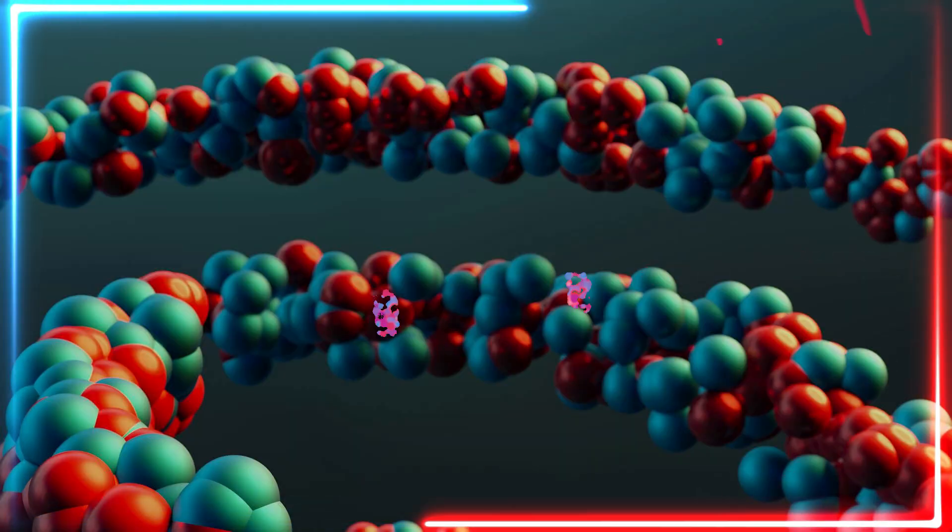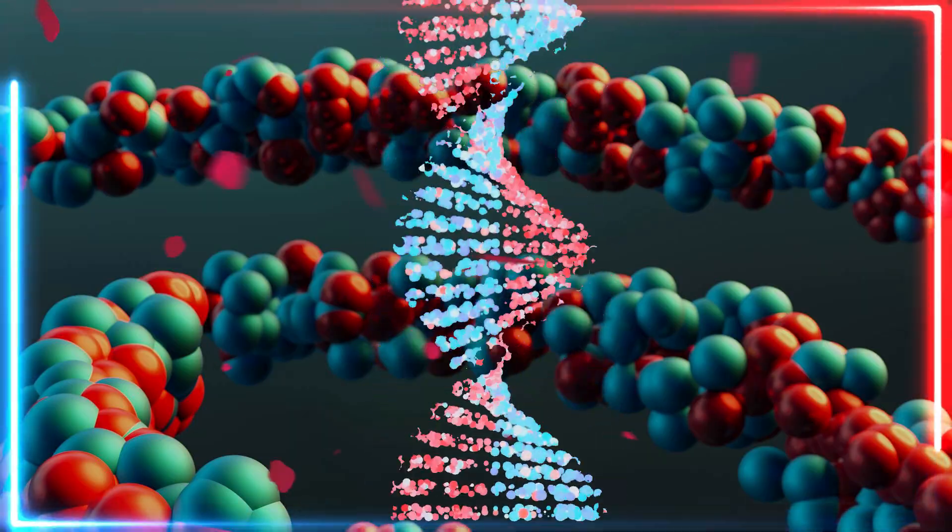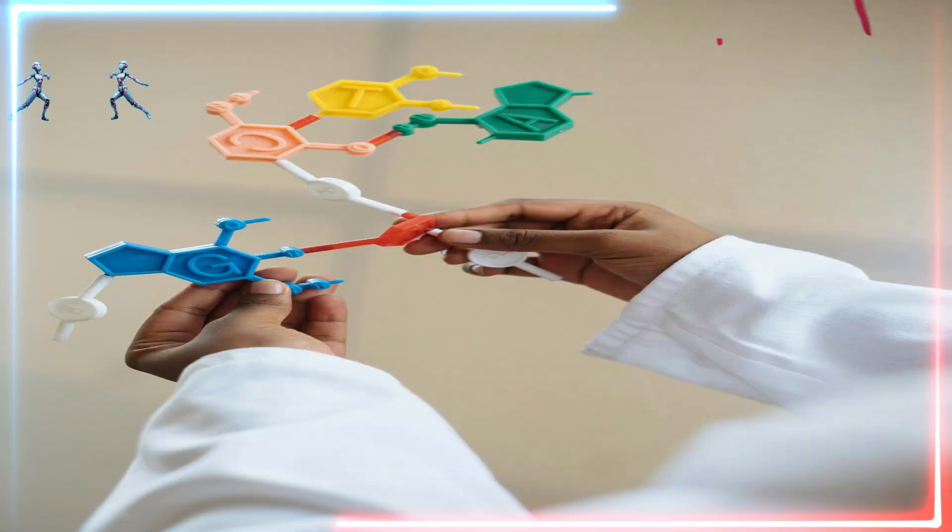It consists of two chains that coil together to form a double helix. Put simply, it's the genetic code that makes each individual unique.